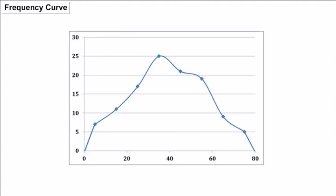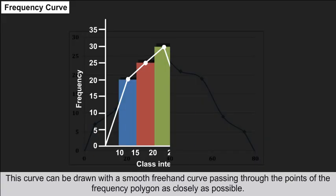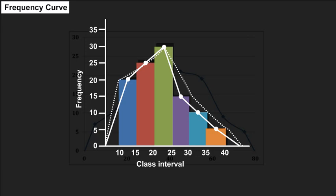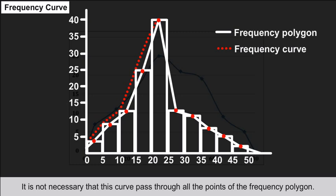Frequency Curve: This curve is drawn with a smooth freehand curve passing through the points of the frequency polygon as closely as possible. It is not necessary that this curve pass through all the points of the frequency polygon.